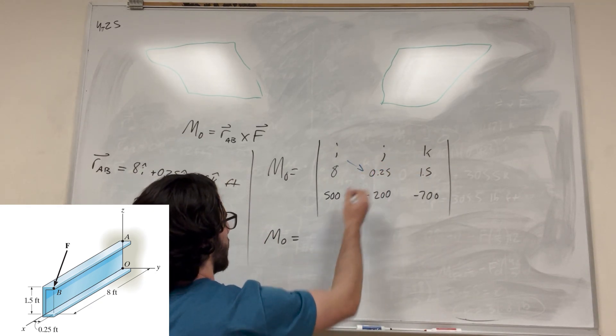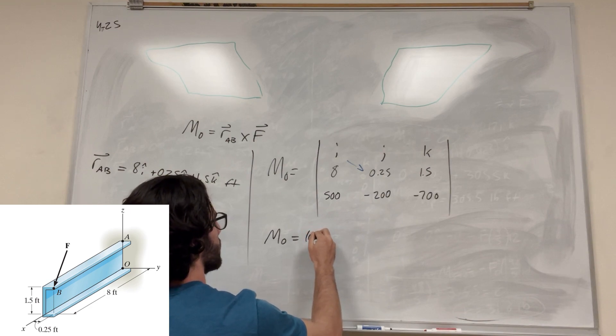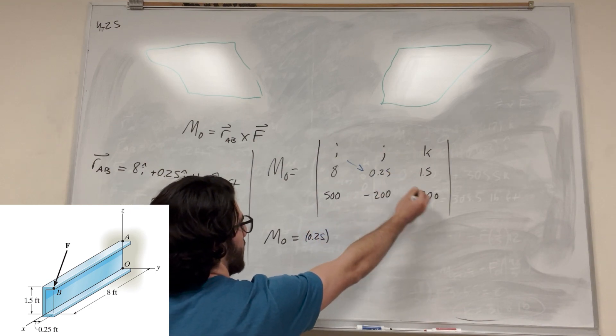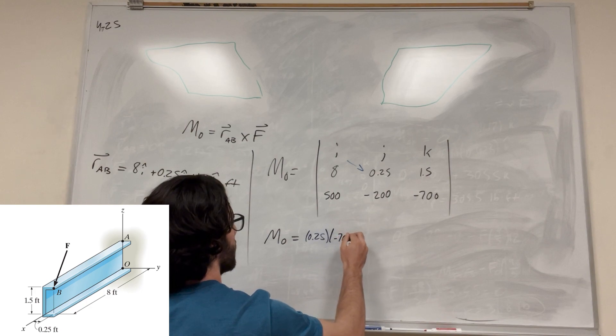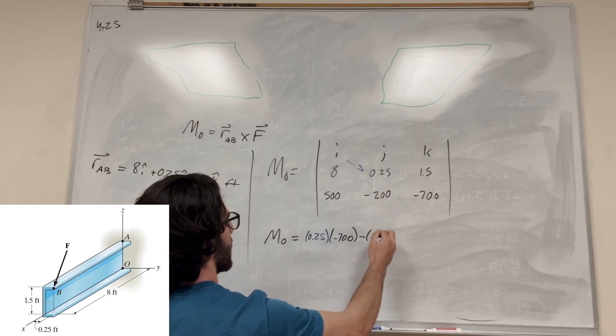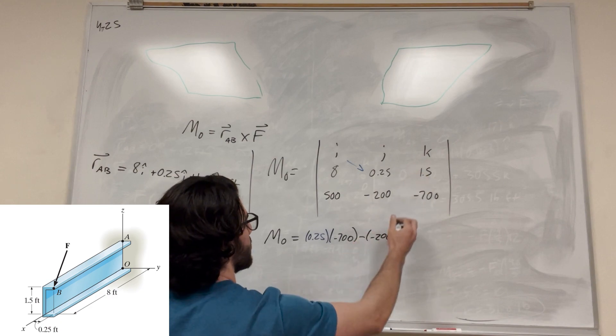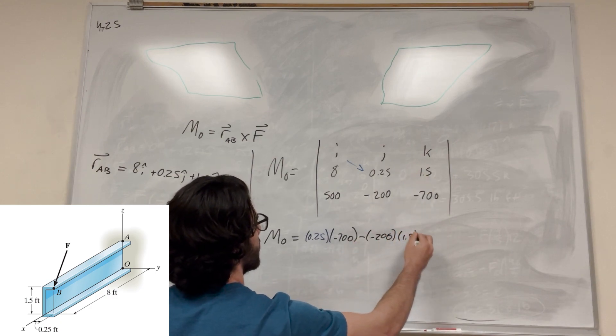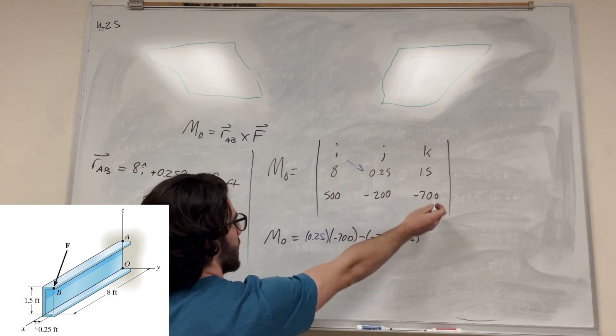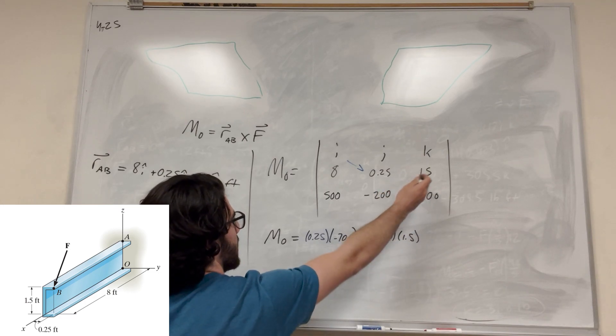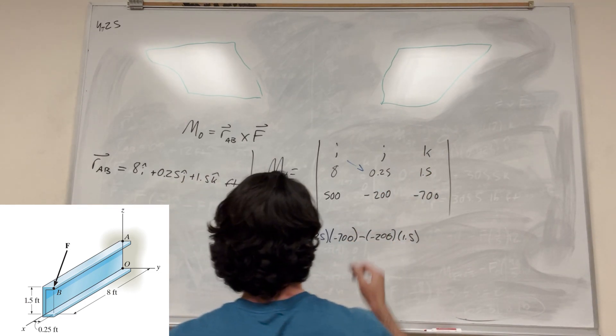So what we do is we take the first one here, 0.25, and multiply it by this, so negative 700. Then we're going to subtract all that by negative 200 times 1.5. So you multiply these two together, then you subtract them by these two together. And then that goes with i.